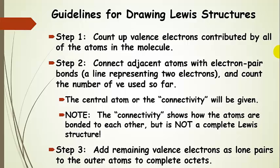Step 1: the first thing we want to do is count up all of the valence electrons contributed by all the atoms in the molecule. For each atom, you're going to figure out how many valence electrons it has. You're going to do that for each atom in the molecule, and then you're going to sum those together. That gives you the total number of valence electrons for the molecule.